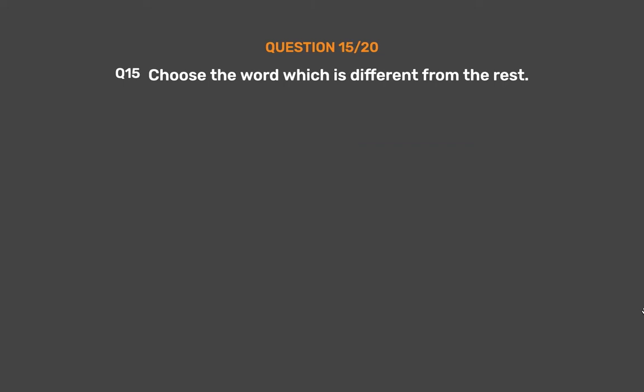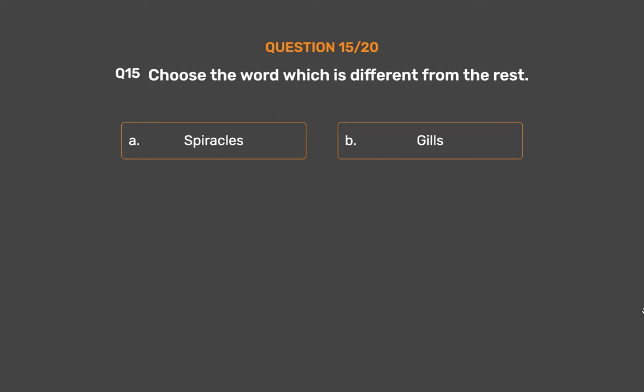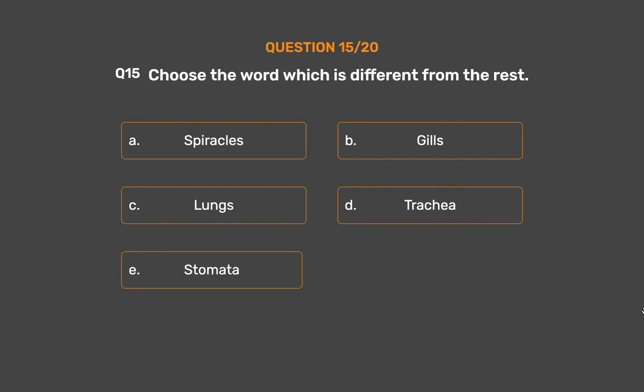Question number 15. Choose the word which is different from the rest. Option A: Spiracles. Option B: Gills. Option C: Lungs. Option D: Trachea. Option E: Stomata.